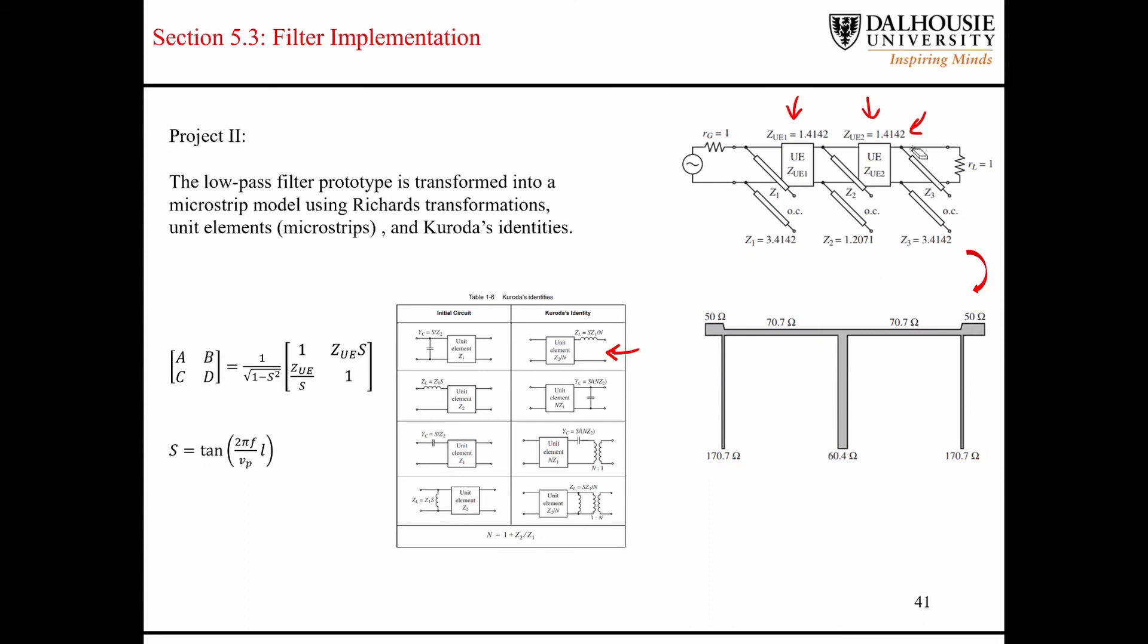After you scale everything to 50 ohms, you take, you multiply each one of these terms by 50 ohms. So your source resistance will equal 50 ohms, your load resistance will equal 50 ohms, and then all of these terms here are multiplied by 50 ohms. And you end up with all of these different characteristic impedance values.